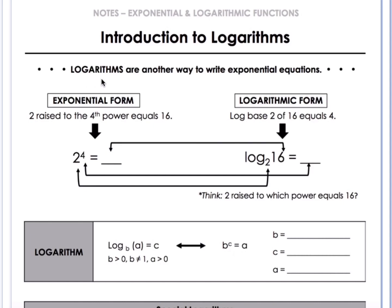As you can see here, logarithms are another way to write exponential equations. We've been used to looking at exponential form, and we say 2 raised to the 4th power equals 16. In order to rewrite it into logarithmic form, we would say this is log base 2 of 16 equals 4.